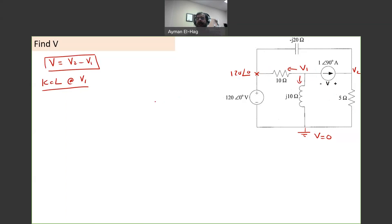So the current to the left is V1 minus 120 angle of zero divided by 10 plus the current that goes down, V1 divided by J10. The current to the right is one angle of 90 equal to zero. So one equation, one unknown, so we can solve it right away to find V1. So this is the circuit part. Now the rest is math.